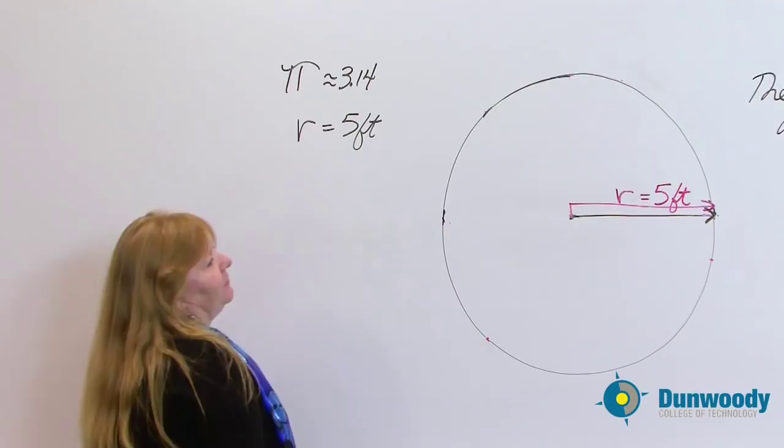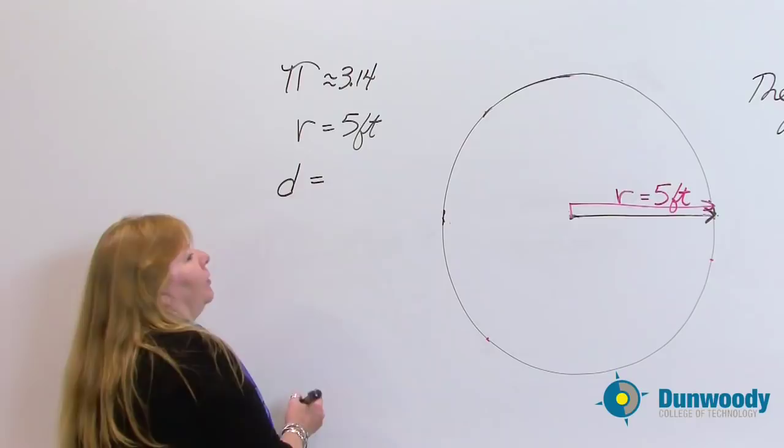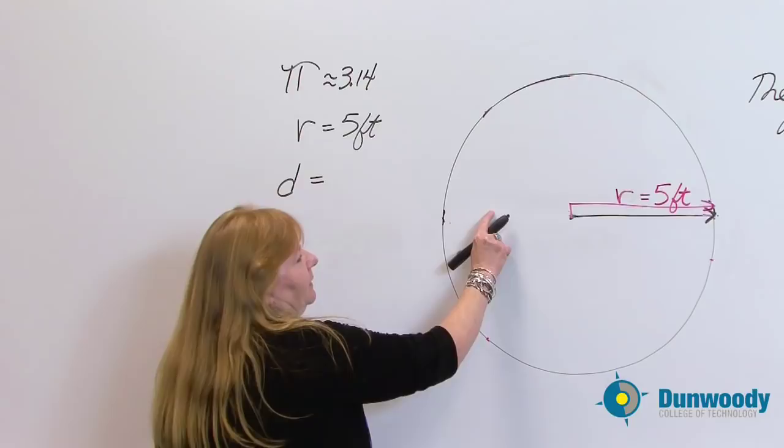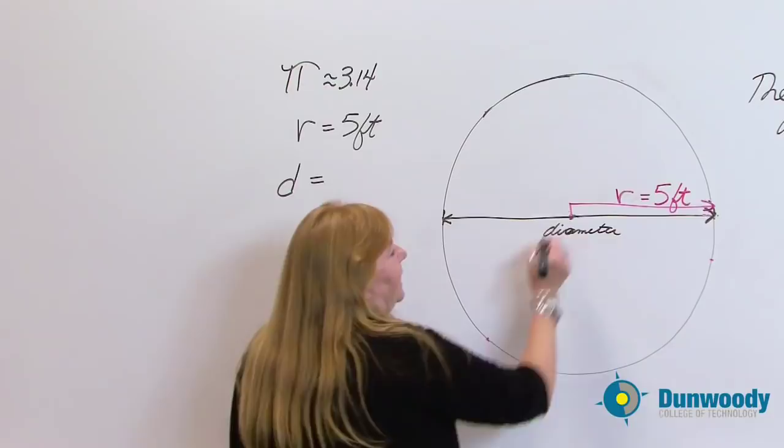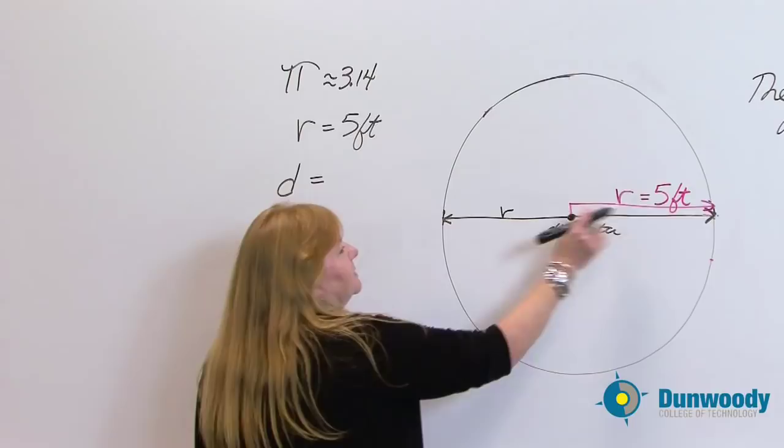That we know. And we also know something about diameter right now. Because what is the diameter? The radius plus the radius, 2 times the radius gives us diameter, doesn't it? Don't forget that diameter is just twice the radius. You have a radius plus a radius gives you diameter.